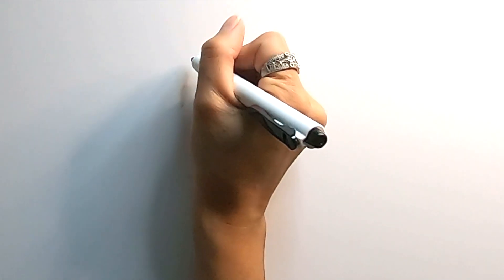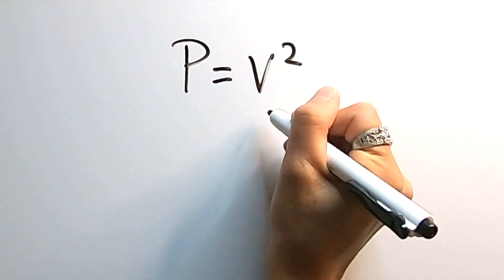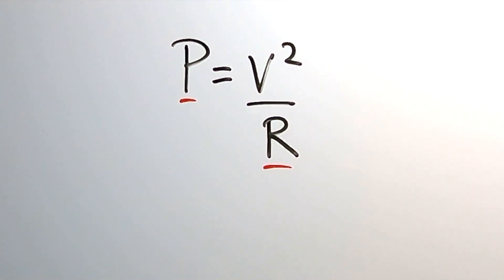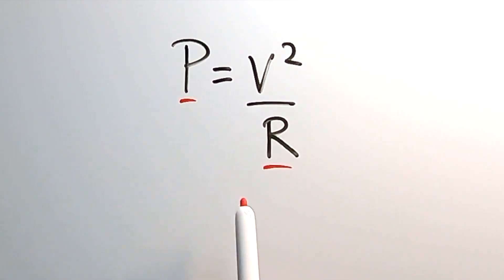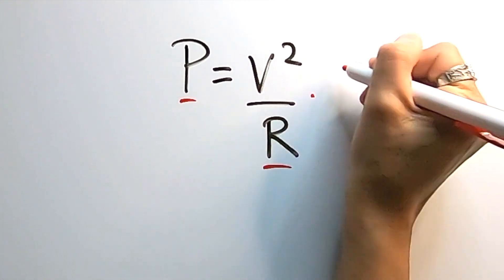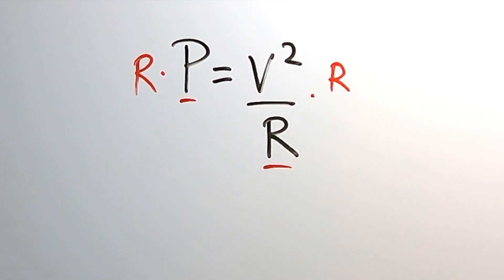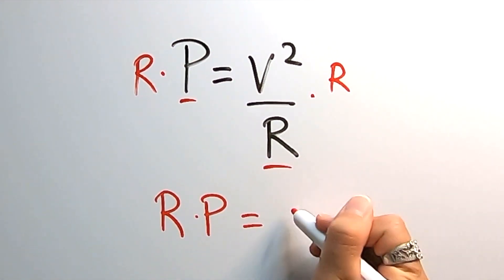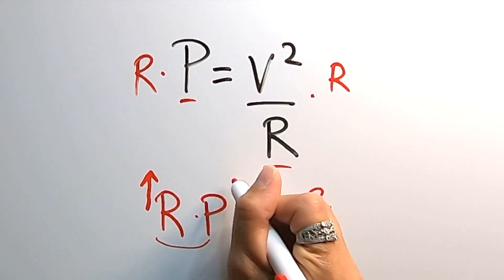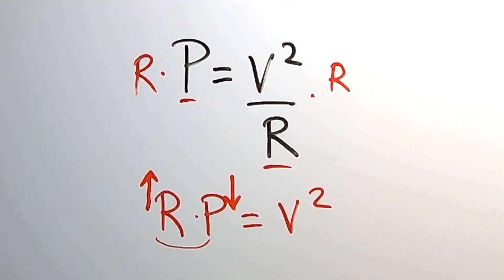Here's another science formula: power is equal to voltage squared over resistance. Let's determine the relationship between power and resistance. They're on opposite sides of the equal sign — one is in the numerator and the other is in the denominator. This is an indirect relationship. If you weren't certain, multiply by R on both sides to get resistance times power equals voltage squared. Now they're both on the same side and both in the numerator, which means they are indeed inversely related. As resistance increases at constant voltage, power decreases — an indirect relationship.